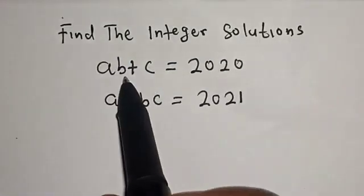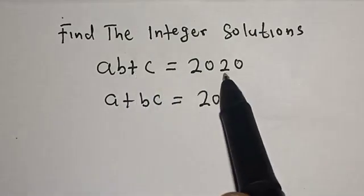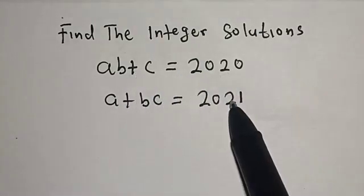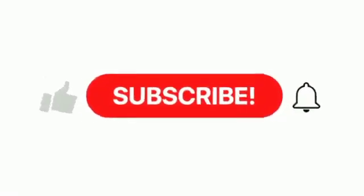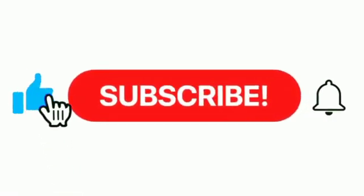A(B + C) is equal to 2020, and (A + B)C is equal to 2021. Please like, share, comment and subscribe.